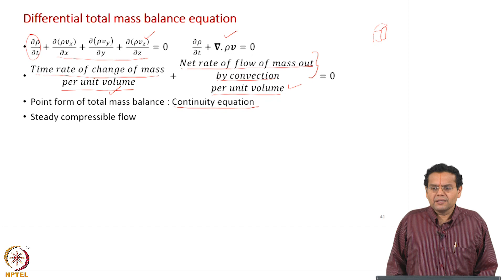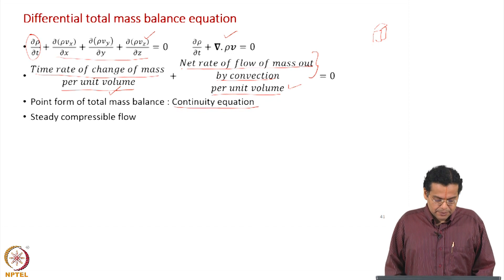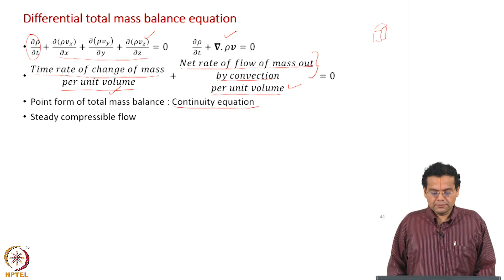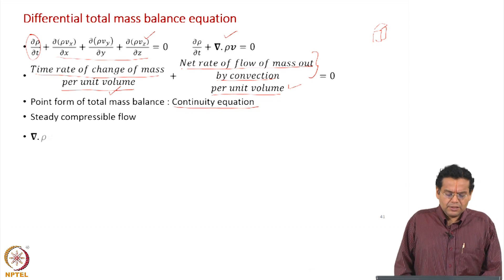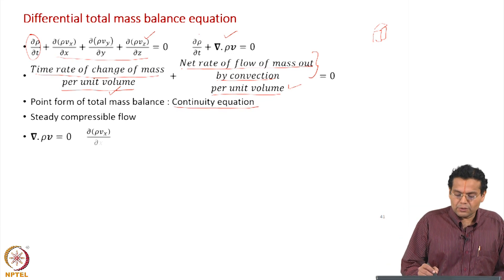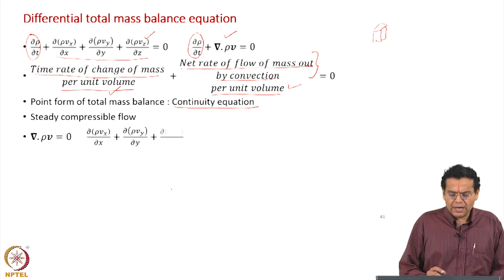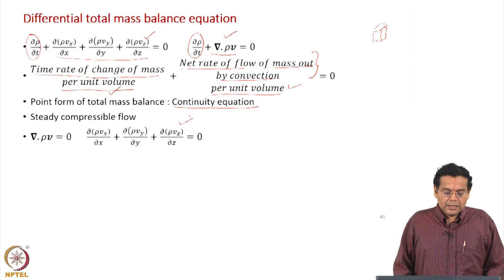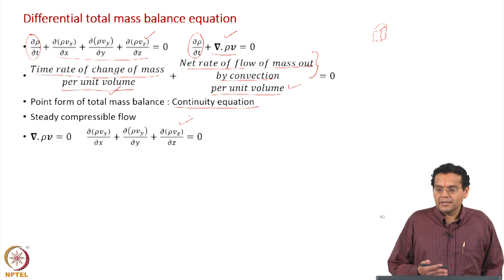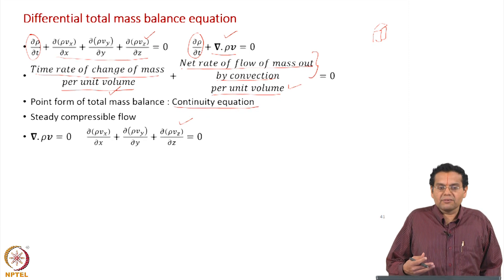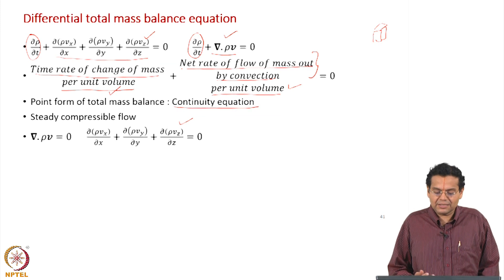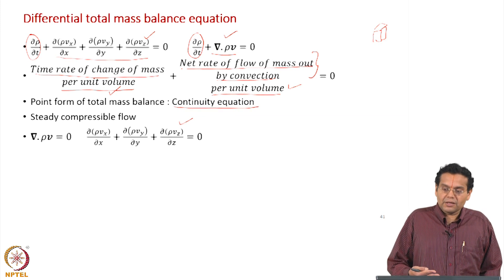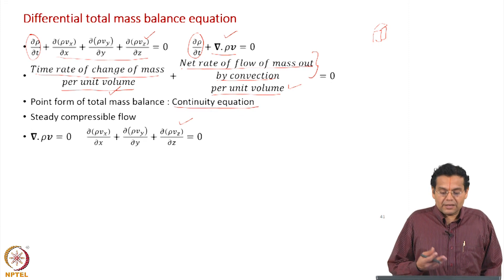Let us simplify and consider two special cases. The first is steady compressible flow. The moment it is steady, there is no transient term, so ∂ρ/∂t is not present. You are left only with the divergence term ∇·(ρv), which is the net rate of mass flow out. An example is flow of air in a rectangular duct at relatively high velocity, where you must use this form of the mass balance equation under steady state conditions.